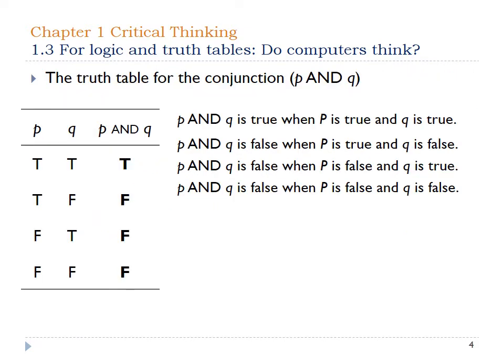The truth table for a conjunction is a little different because we have to look at both pieces individually, and they both have to be true for your final statement to be true. So in the first case, if P and Q are both true, the result is obviously true. However, in every other situation, if one of them is false, the whole final statement is false.